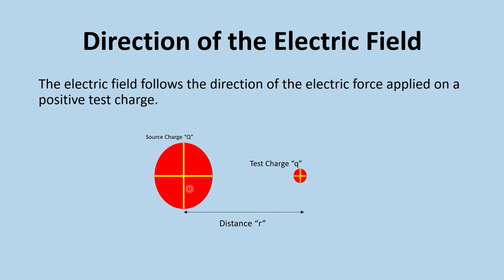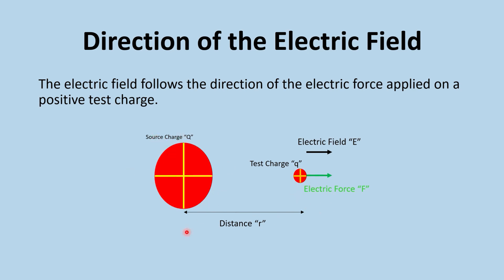Consider a positive source charge and a positive test charge. Since both are positive, they repel each other, so the force on the test charge points away from the source. The electric field follows the same direction. So when the source charge is positive, the electric field and the electric force on the positive test charge are in the same direction — pointing away from the source.